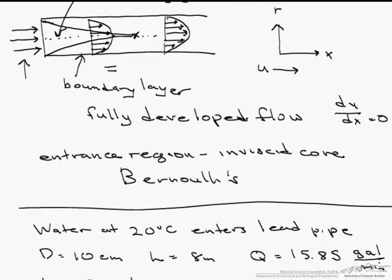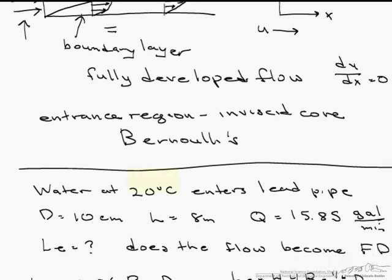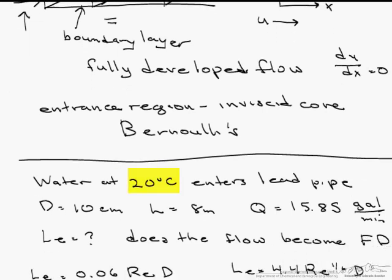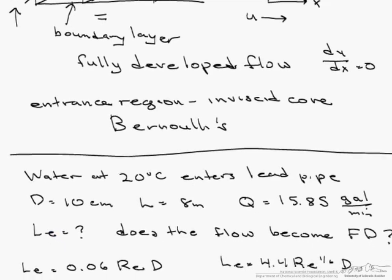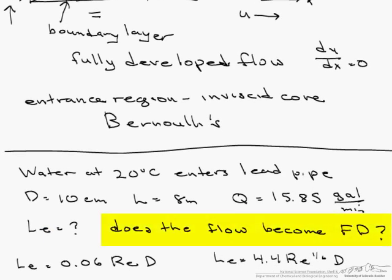So now let's look at an example. Let's say we have water at 20 degrees C and it enters a lead pipe with a diameter of 10 centimeters and a length of 8 meters. The volumetric flow is 15.85 gallons per minute, and what we want to find is that entrance length, as well as figure out does the flow become fully developed.